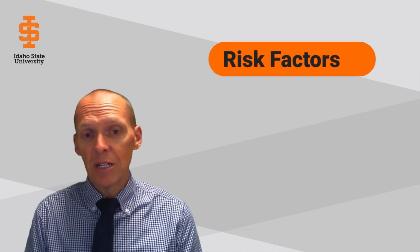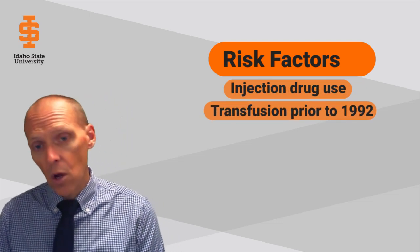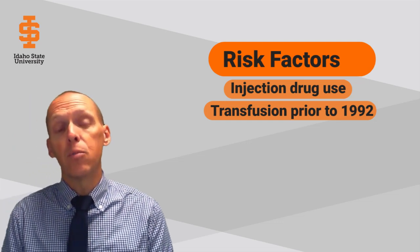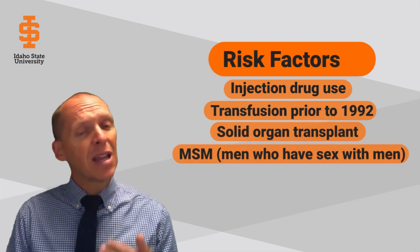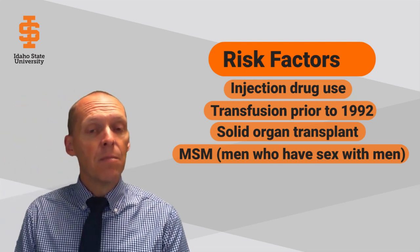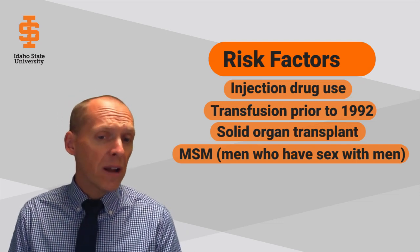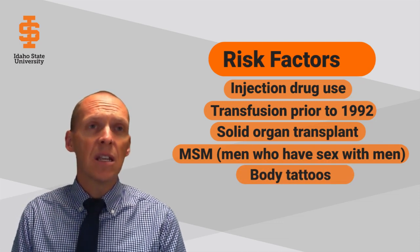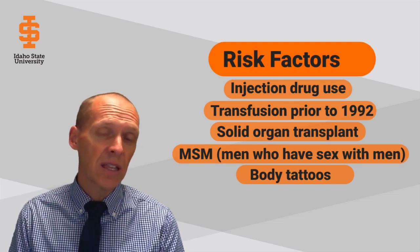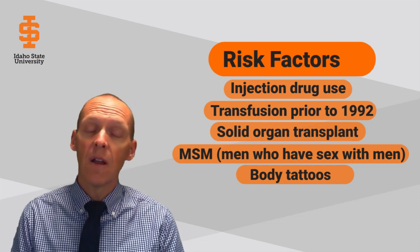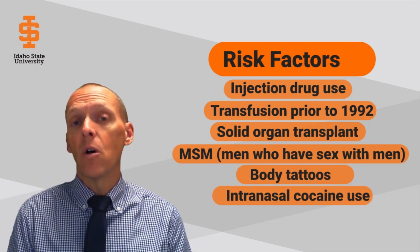The major risk of transmission in the U.S. is from injection drug use. Other risks include transfusions prior to 1992 when the blood pool started to be screened more regularly, those undergoing solid organ transplant, and men who have sex with men. Hepatitis C is generally not considered a sexually transmitted disease, but it has been documented in men who have sex with men. Because the virus can live outside the body on drug equipment, those who share drug paraphernalia, even with intranasal drug use outside of injection drug use, may also see risk of transmission.